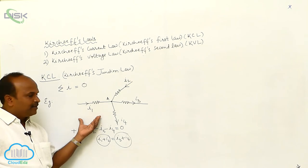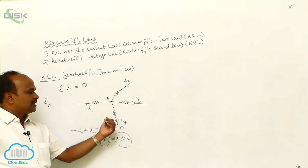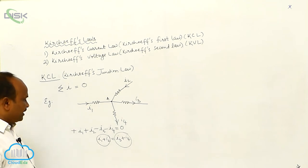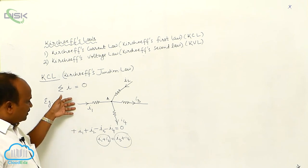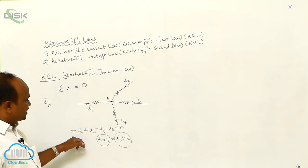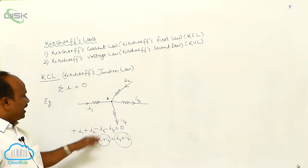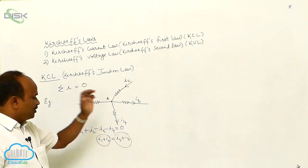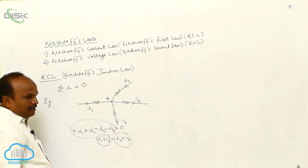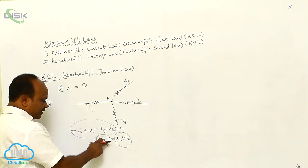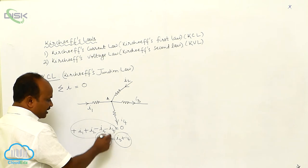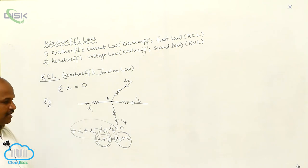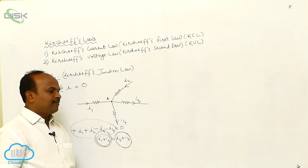Let us consider an example: 4 resistors are arranged, through which I1, I2, I3, I4 currents flow. I1 is towards the junction — taken as positive; I2 is towards the junction — taken as positive; I3 is away from the junction — minus; I4 is also away from the junction — minus; therefore equals zero. If you simplify: I1 + I2 = I3 + I4. This is the sum of currents towards the junction, and this is the sum of currents away from the junction, according to Kirchhoff's first law.